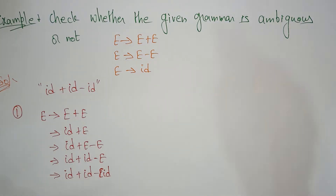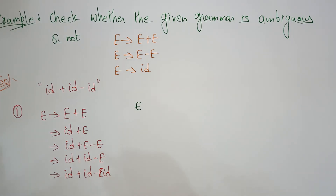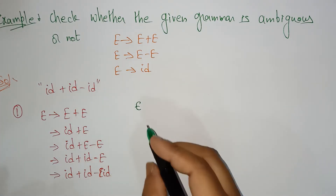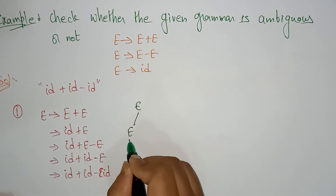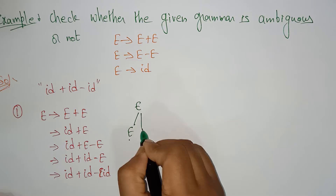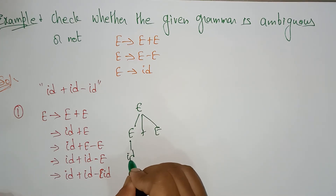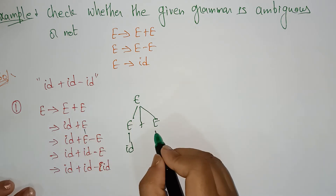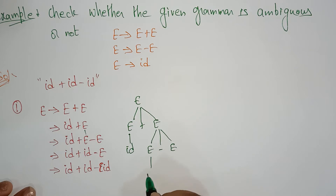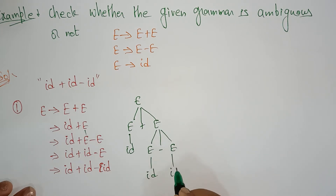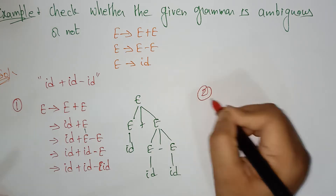Here I am just drawing the parse tree so that you can easily understand. The given grammar can be generating and deriving two parse trees. First, e plus e. Next, e is replaced with id. Then this e is replaced with e minus e. And again, this e is replaced with id, and this is id. Now coming to the second way.